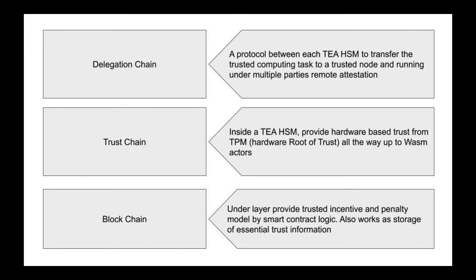The hardware root of trust generates proof of trusted data at runtime — the proof of trust, or POT. The POT data is stored and evaluated by a randomly selected remote verifier using blockchain consensus. The randomness of the remote verifier is guaranteed by both the blockchain and the delegation chain, and the randomness itself can be verified. The delegation chain is a network protocol that guarantees all secrets are kept inside and transferred between verified trusted hardware modules only.